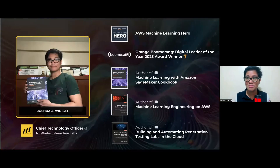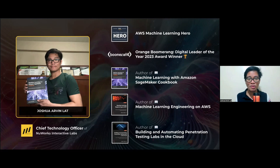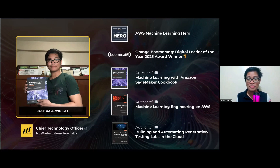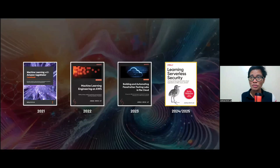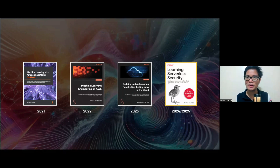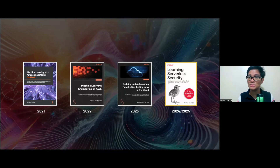Fast forwarding another 15 years — here we are. To introduce myself, I am Joshua Arvin Lat and I am the Chief Technology Officer of Newworks Interactive Labs. I am also an AWS Machine Learning Hero and the author of three books: Machine Learning with Amazon SageMaker Cookbook, Machine Learning Engineering on AWS, and Building and Automating Penetration Testing Labs in the Cloud. Good news — there's a fourth book coming out maybe end of this year or early next year, titled Learning Serverless Security. Without further ado, let's continue on how to secure JavaScript applications.